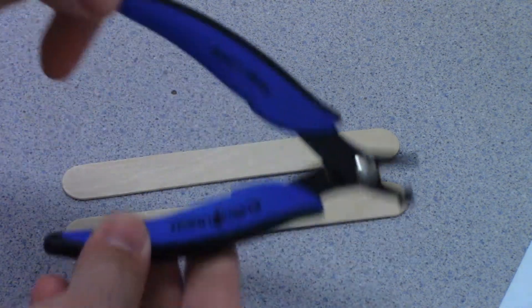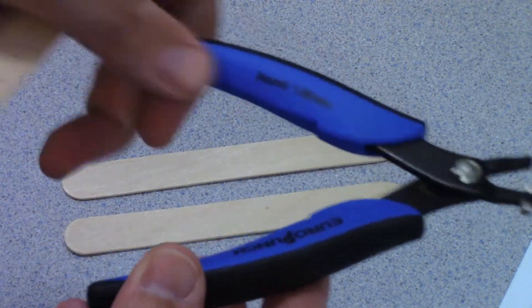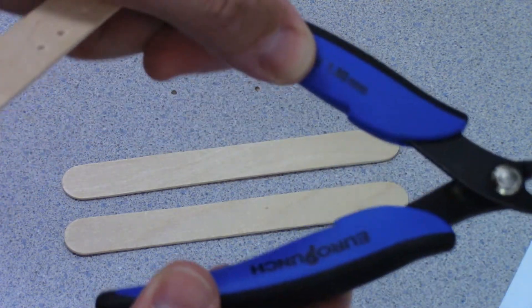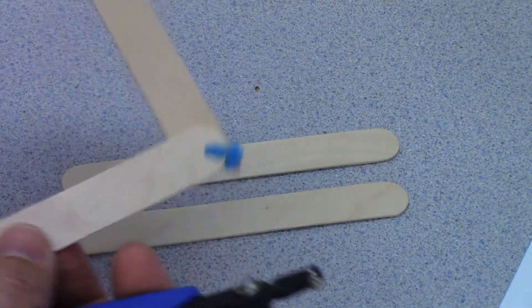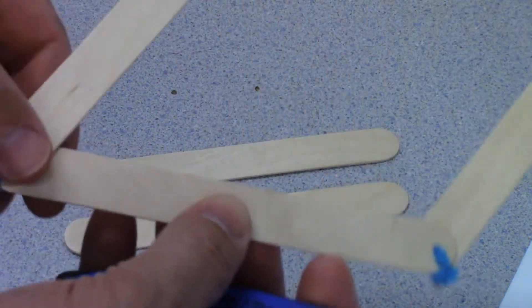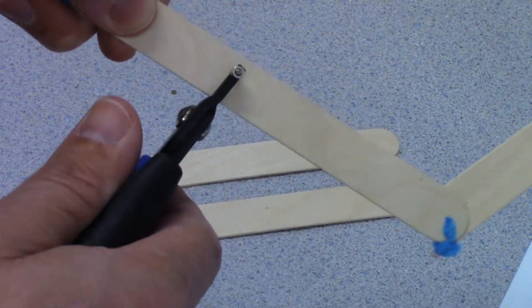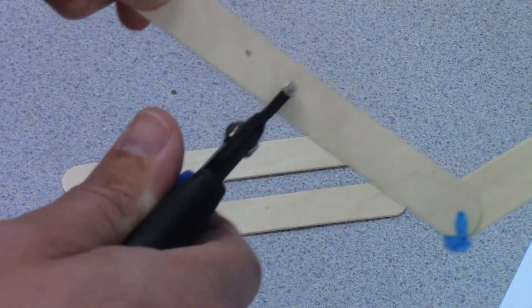But then I found this. It's a 1.8mm punch. It's for punching into metal so I figured it could handle wood just fine and it does. I can punch holes in here no problem.